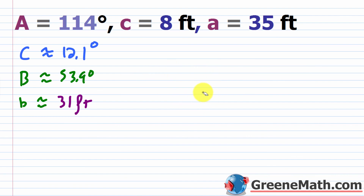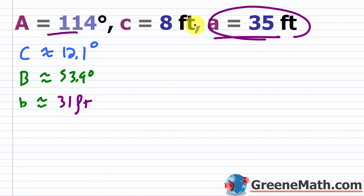When you get the obtuse angle situation, it's much easier. When dealing with an acute angle and its opposite side, you really have to dig into the details. With an obtuse angle and its opposite side, simply check: if the opposite side is larger than the other given side, you have one solution. If it's equal or smaller, there's no solution.